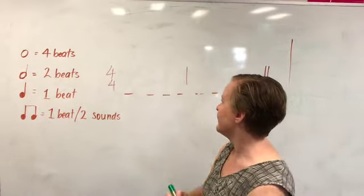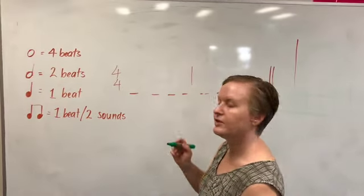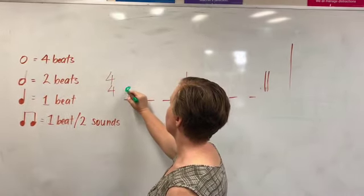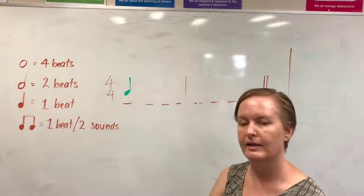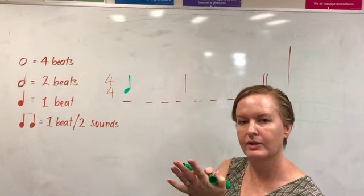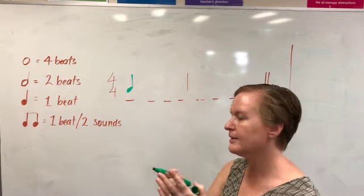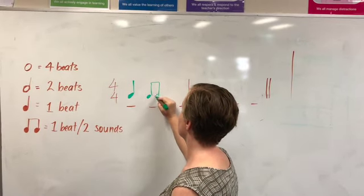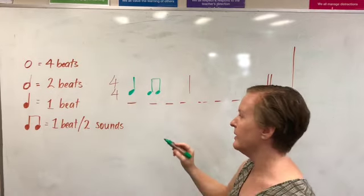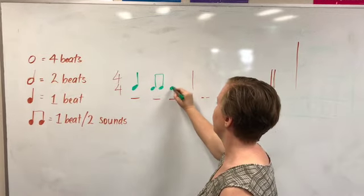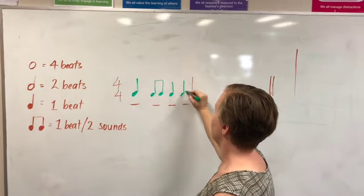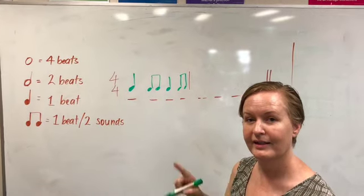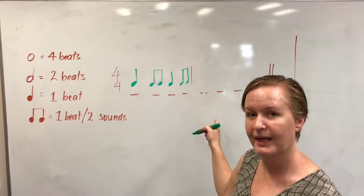All right, let's check your answer. To begin with it was a longer sound, so that's going to be my crotchet, then two shorter sounds in the time of one — a pair of quavers — and then that pattern was repeated. How'd you go? Did you get it right? Let's try the second bar now.